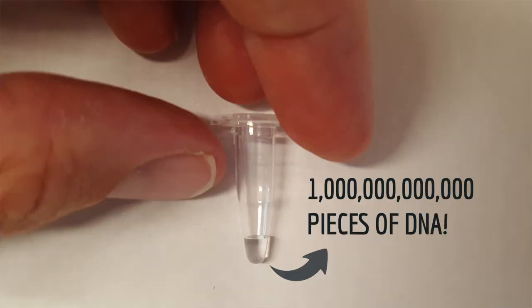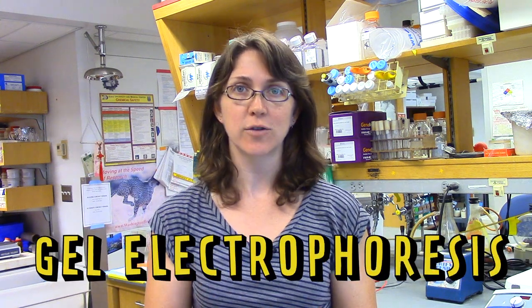So, the researchers need a way to see whether the pieces of DNA in here are long or short. But the problem is, the DNA is tiny. This little tube has one trillion pieces of DNA in it. I can't see them by eye. I can't even see them with a light microscope. So I need a way to see whether the pieces of DNA in this tube are long or short. And the cheap and easy way to do that is gel electrophoresis.